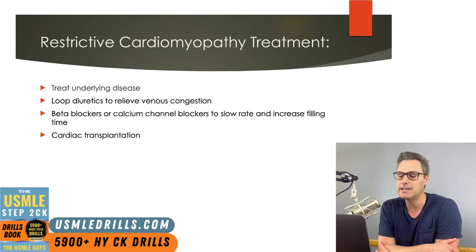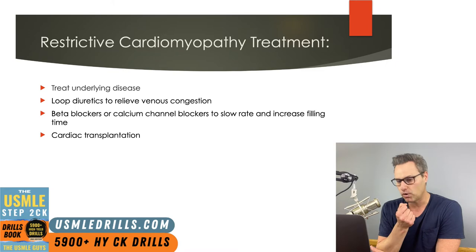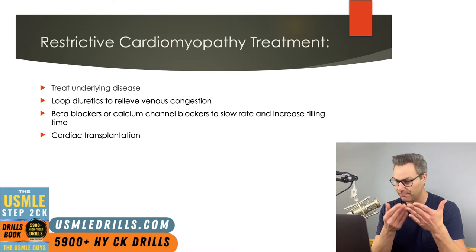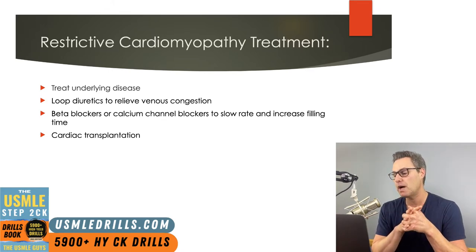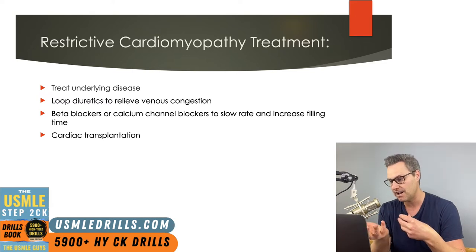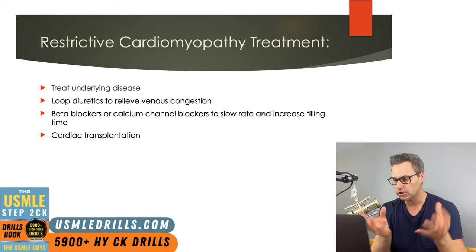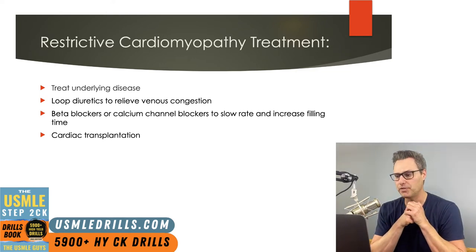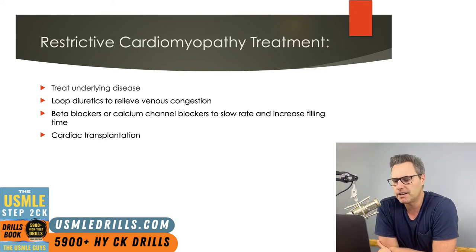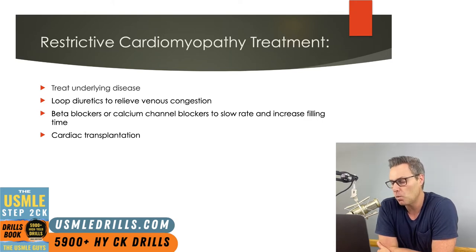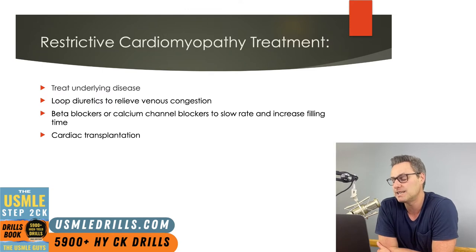The number one thing to keep in mind for treatment is to treat the underlying disease first and foremost. Loop diuretics can help reduce venous congestion, and beta blockers or calcium channel blockers can be useful in slowing the heart rate, which improves filling time and allows more blood to be pumped out. Ultimately, cardiac transplant may be necessary — that is the only curative measure. Restrictive cardiomyopathy patients have the lowest one-year survival rate while waiting for a transplant, but following transplant they do similarly well as other cardiomyopathy patients.